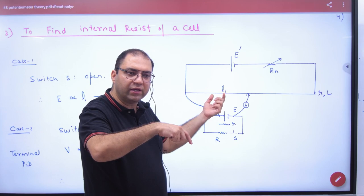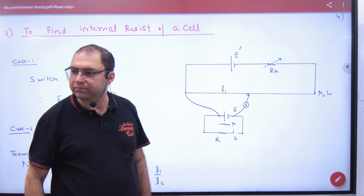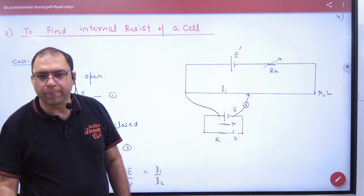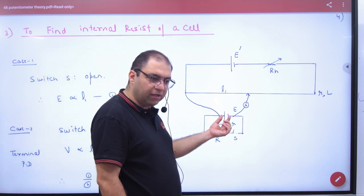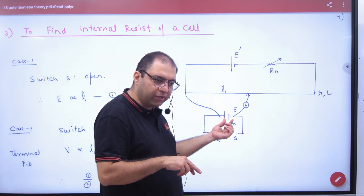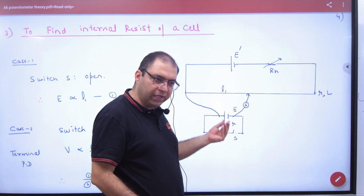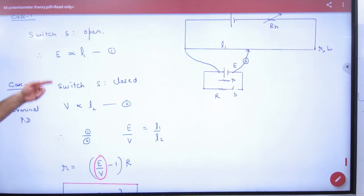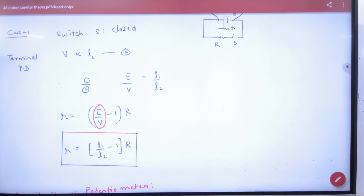So what will the balancing length be? L2. It will change. L2 will be different than L1. So if E corresponds to L1 and V corresponds to L2, we have a formula made for internal resistance.